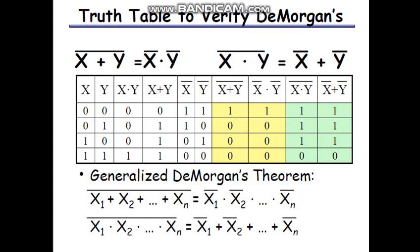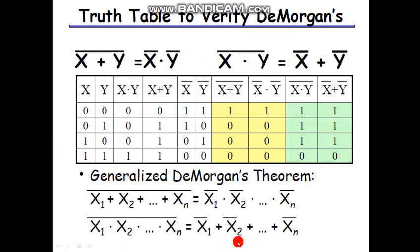De Morgan's theorem states two statements. Statement one: x plus y, whole bar, equals x bar dot y bar. Statement two: x into y, whole bar, equals x bar plus y bar. Using a truth table, we will try to verify and prove De Morgan's theorem.